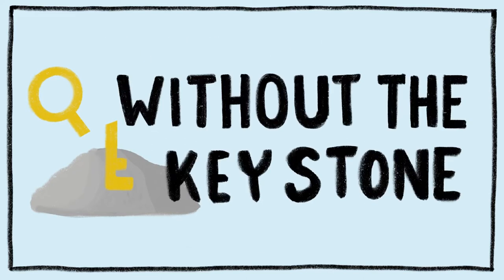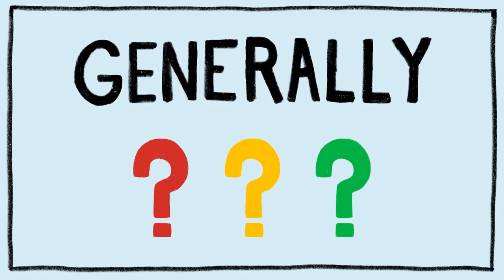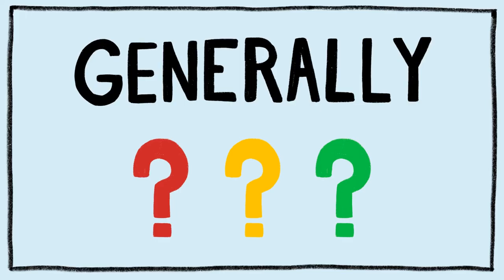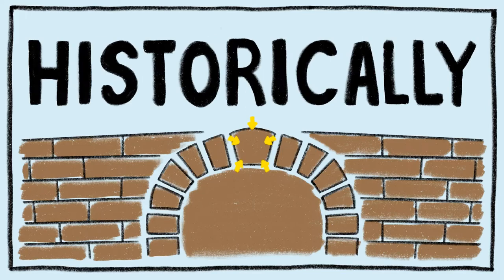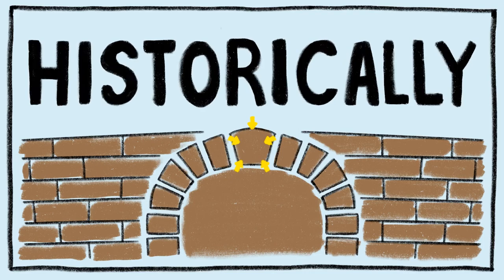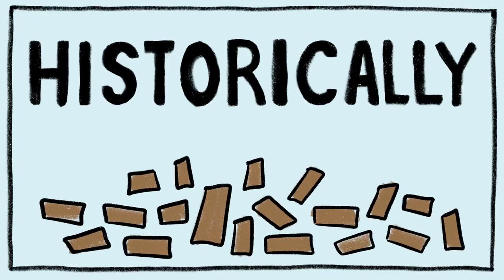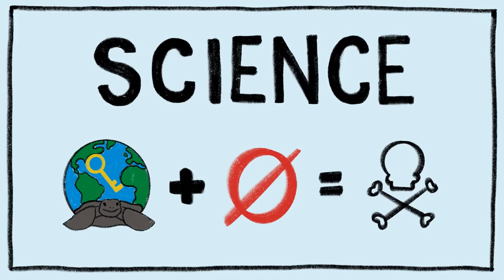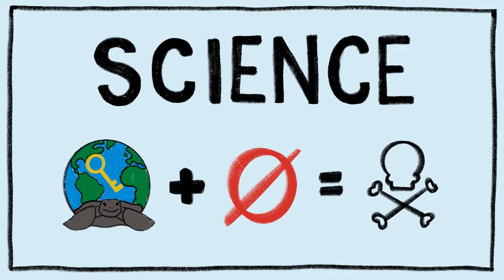What would happen without a keystone? Generally, if you remove the central principle, it can cause a whole system to fall apart. Historically, if you remove the keystone, it can cause the whole arch to crumble and fall. In the environment, if you remove a keystone species from their ecosystem, it can cause a chain reaction, causing the whole system to collapse.